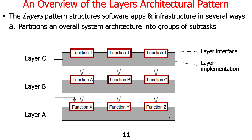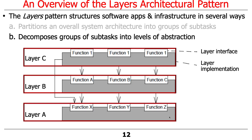You can also see a couple of other interesting things here. Things in layer C can actually bypass layer B and go directly to layer A if they want to — you have to decide whether that's acceptable or not; sometimes it is, sometimes it isn't. Within a given layer, the subtasks are organized in various ways. You take the groups of subtasks and arrange them in these different layers. You have an interface, and then you have an implementation which is not visible to the layers above, but which is implemented using the services or subtasks from the layers below.